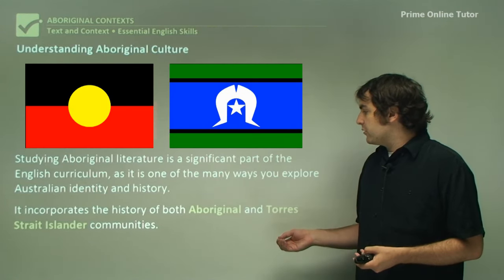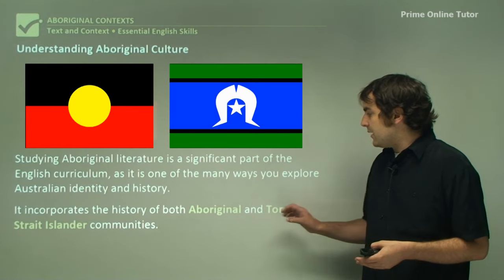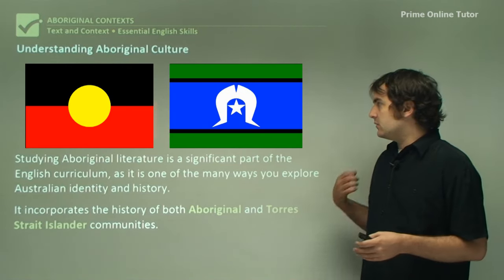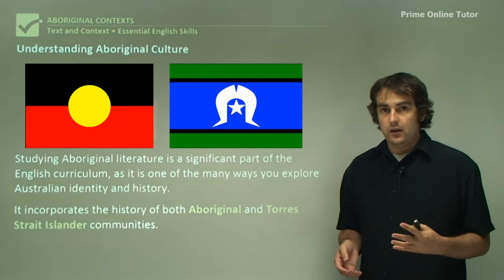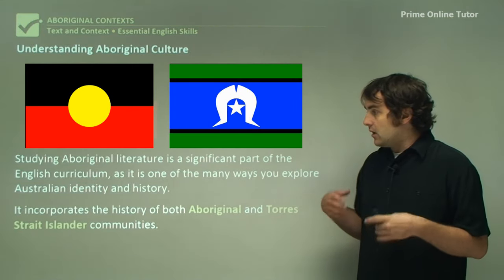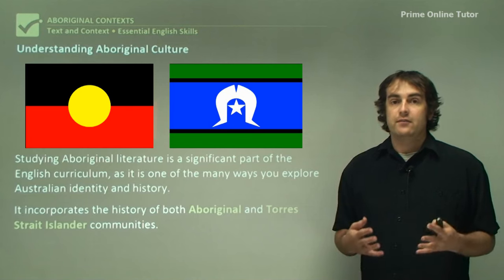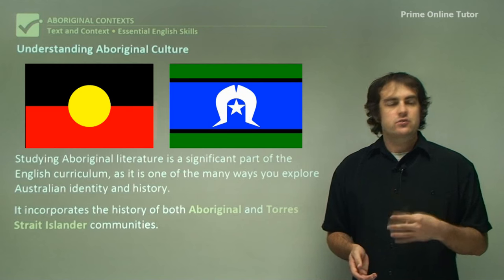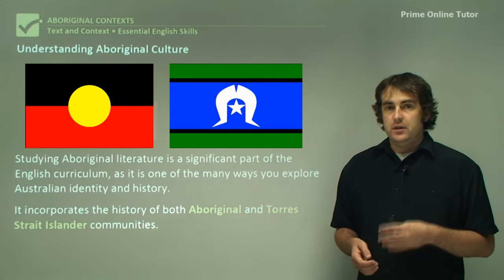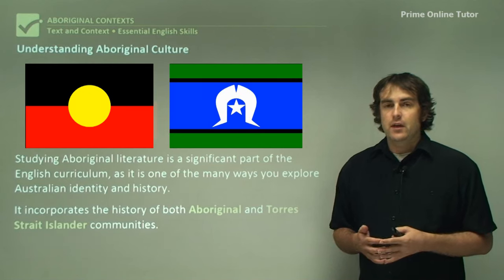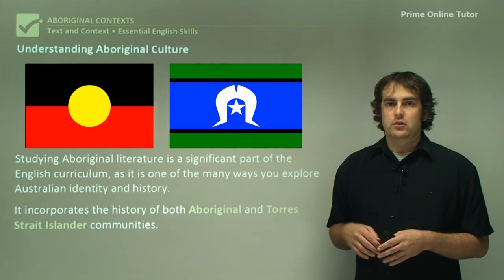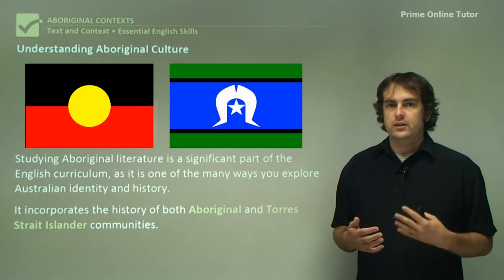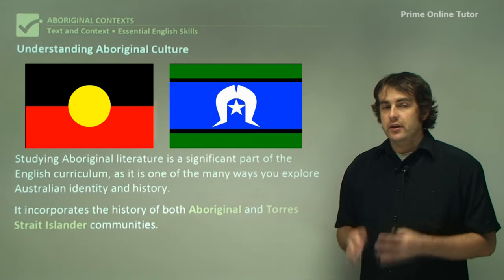A lot of Indigenous Australian history is tied in with Australian history - it is very much tied into the fabric of what makes Australia Australia. It incorporates the history of both Aboriginal and Torres Strait Islander communities, and it's important to make the distinction that they are in many ways separate communities. Together they form the people who have native title over Australia, and their connection with Australia and the Australian landscape is much deeper and more enriched than it is for many other people.